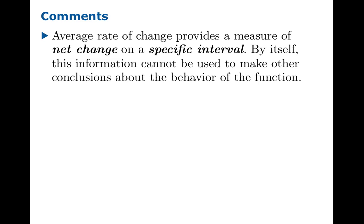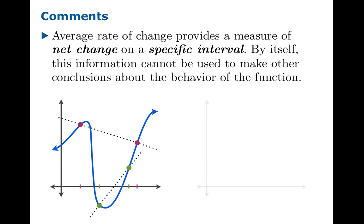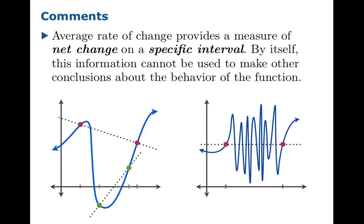Here's a more conceptual issue. The average rate of change provides a measure of net change on a specific interval. It only tells you what it tells you and nothing more. Suppose you knew that the average rate of change on a certain interval was negative. You might think the function is forced to decrease from one point to the other, but that's not necessarily the case. You can imagine a function and an interval inside the original interval where the average rate of change is actually positive. You can imagine an interval on which the rate of change is zero, and yet the function varies wildly throughout the interval.